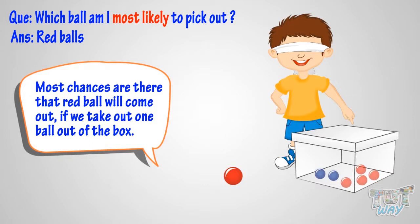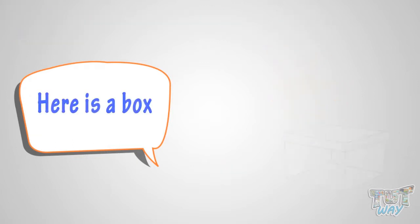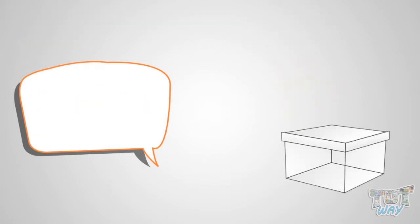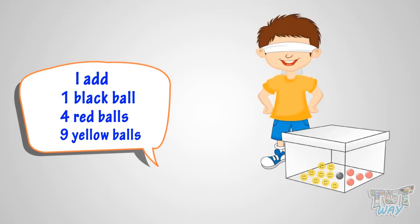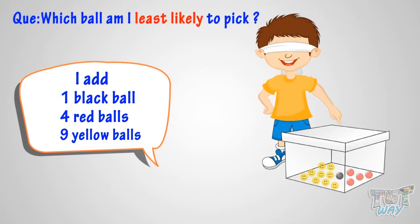Now let's take another example. Here is a box. I add one black ball in it, four red balls in it, and nine yellow balls. Now, if I pick out any one ball from the box without looking into the box, which ball am I least likely to pick? Think.